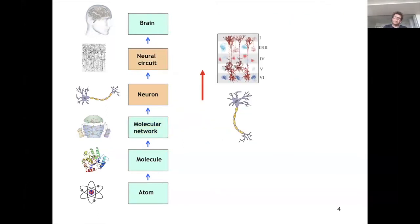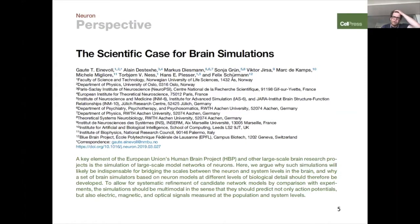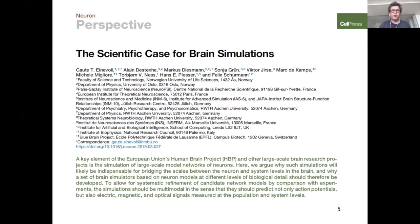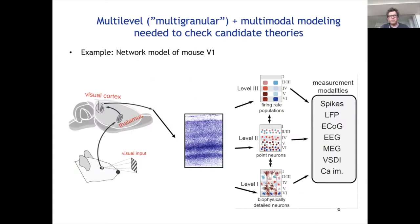When it comes to networks, we know the principles for how to model them — we can hook neurons up in networks and model the synapses — but it is very difficult to make these models mimic anything you measure in experiments in terms of network activity. We wrote a perspective article in the Human Brain Project on why we need large-scale networks and large-scale brain simulations to try to bridge this gap. You need these simulations to test hypotheses. What we argued for is multi-level, multi-modal modeling needed to check candidate theories.